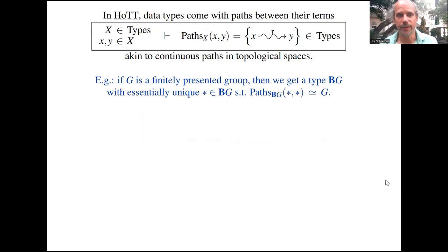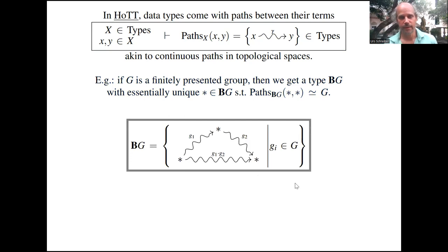So this originally used to be called the groupoid interpretation of type theory, or the homotopy theoretic model of identity types. Now it's just homotopy type theory. The archetypical example to keep in mind is the following: if G is a finitely presented group, then there is a type which I'm going to denote BG, the delooping of G, which is characterized by the fact that it has a unique term. It's actually uninteresting in classical languages, just a single term. But that type actually has a non-trivial path from that term to itself for every group element, such that the composition of these paths corresponds to the product operation of the group.